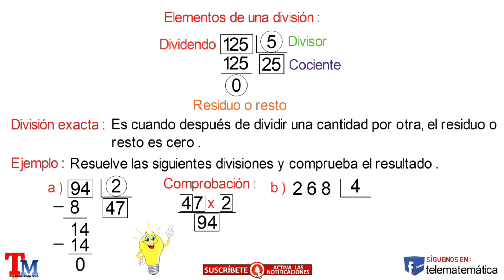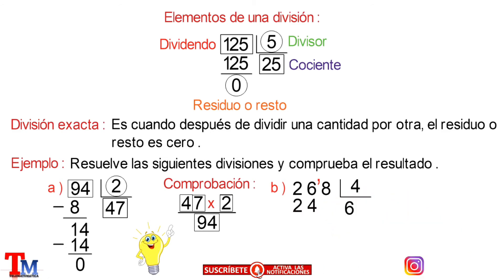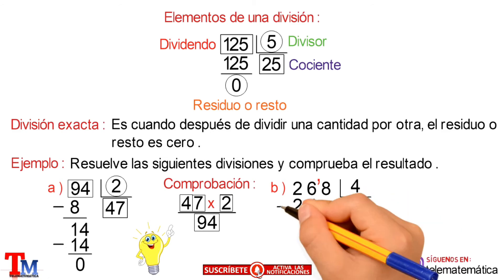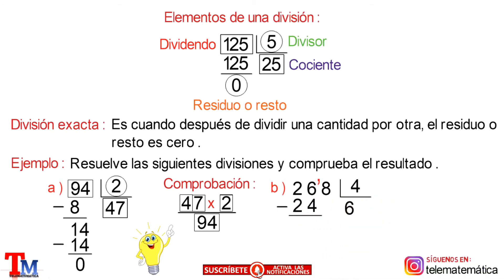Veamos otro literal: 268 dividido para 4. Comenzaremos seleccionando la primera cifra de izquierda a derecha del dividendo, pero como esta es menor que el divisor, tomaremos la siguiente cifra, que sería el 6. Como este valor es mayor que el divisor, buscamos un número que multiplicado por 4 se acerque a 26, que en este caso es el número 6. Multiplicamos 6 por 4 es igual a 24, lo ubicamos debajo del 26, y restamos ambos valores, obteniendo como resultado 2.